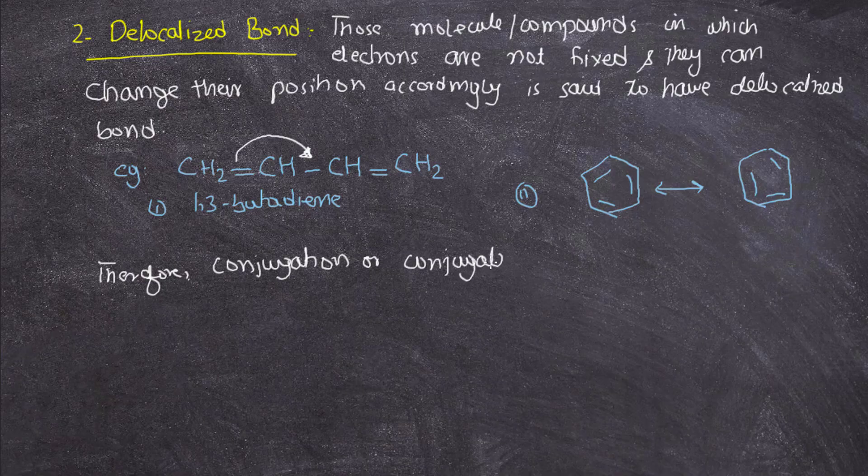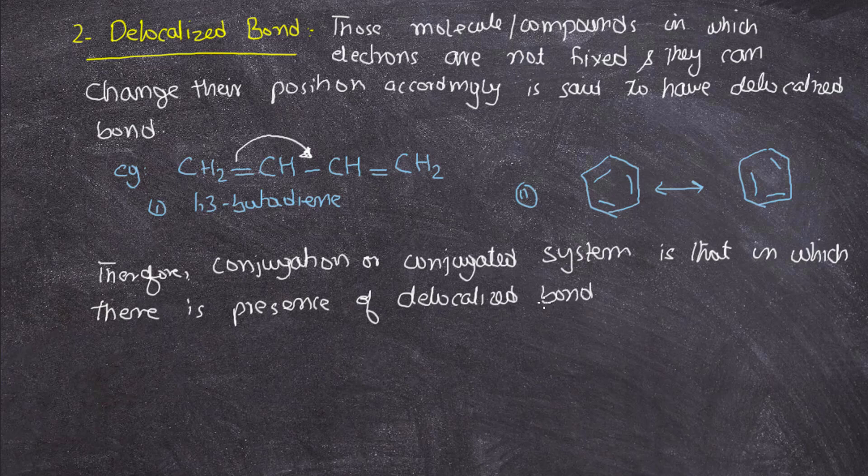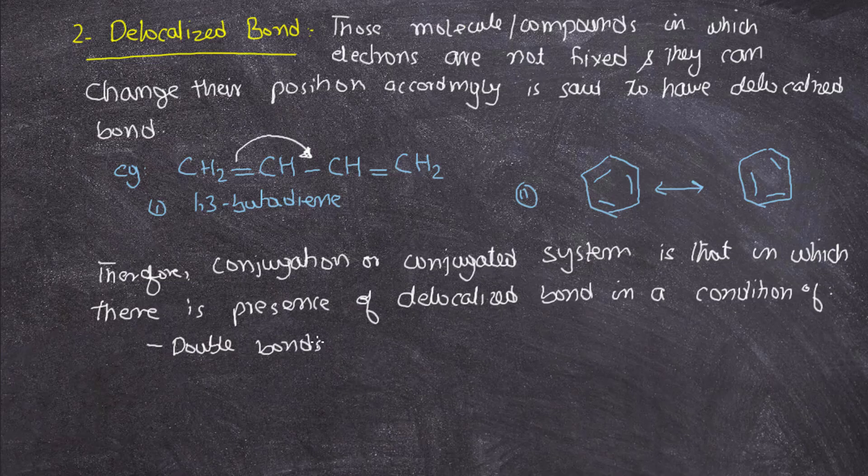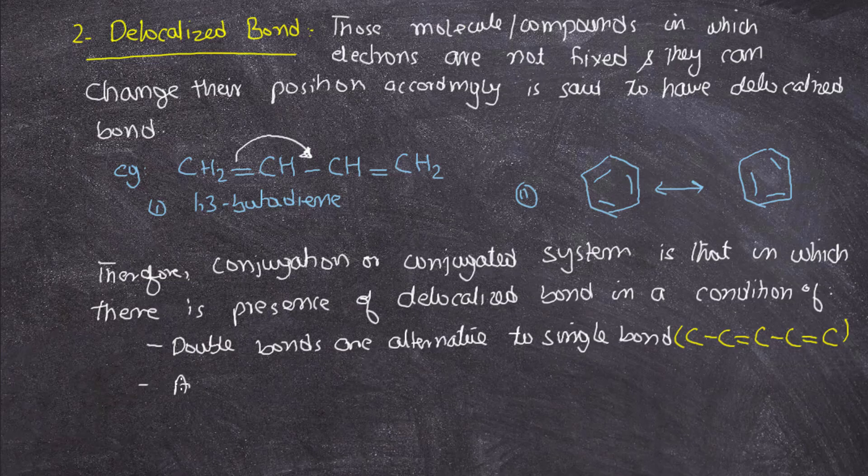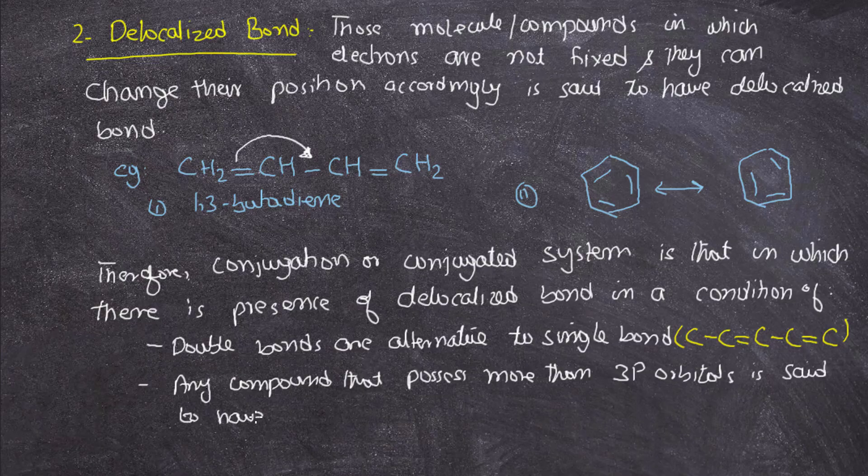So one of the double bonds from the first carbon may move towards the second carbon. Another example is the benzene ring. Benzene ring can change its inside resonance bond, which is a delocalized bond. Therefore, conjugation or conjugated system is that in which there is a presence of delocalized bonds in a condition that double bonds are alternate to single bonds.